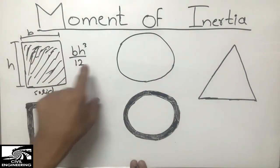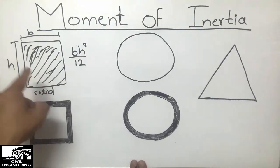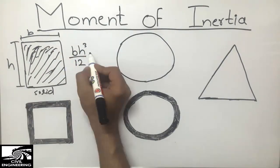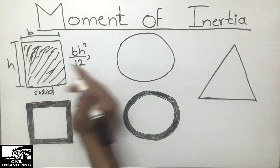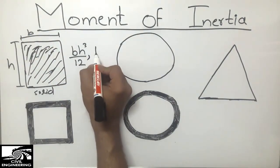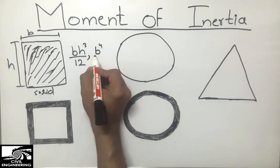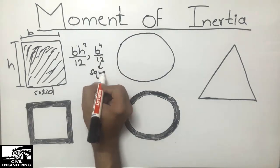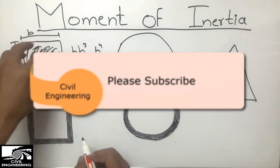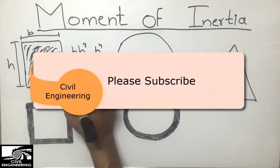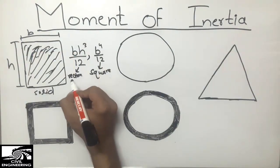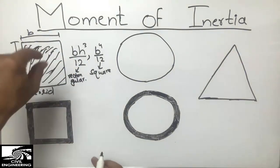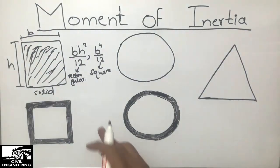So bh³/12 is the moment of inertia of the solid rectangular object. In the special case of a square cross-section, where b and h are equal, we can write it as b⁴/12. This formula applies to the square section, while bh³/12 applies to the general rectangular section.